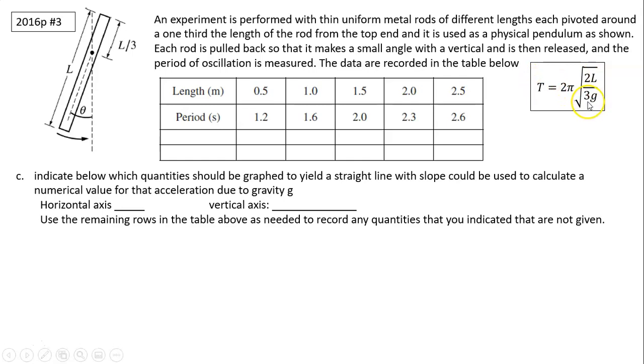Part a, T equals to 2 pi, 2l over g, or this part b2. So how do we graph a linear relationship? So you can say it's T versus square root of l, because T is directly proportional to square root of l. Or you can say you can square both, T squared is proportional, directly proportional to l. So I've chosen T squared proportional to l. So horizontal can be l, vertical is just T squared. Or you can say horizontal is square root of l, vertical is just T. That's fine also. Now we will have to use the remaining rows in the table above as needed to record any quantities you indicated that are not given. In this case, I have to find period of T squared. So it's T squared. I simply square each value over here. So these are the values I have. And those values are important because the next question, I have to use those values to do graphs.